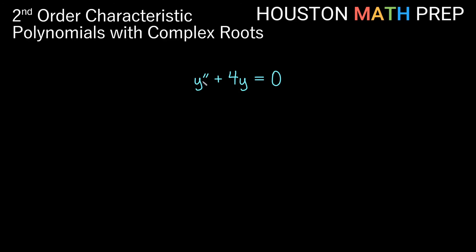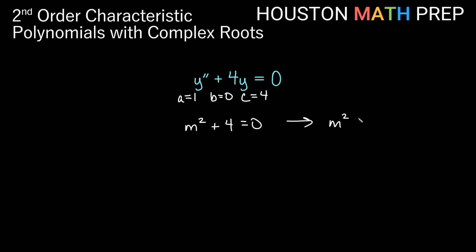Looking at another example: y double prime plus 4y equals zero. Here a is 1, there is no y prime term so b is 0, and c is 4. That gives us m squared plus 4 equals zero. We don't need the quadratic formula here — subtracting 4 gives m squared equals negative 4, and taking the square root gives m equals plus or minus 2i. This is really 0 plus or minus 2i, so our alpha is 0 and our beta is 2.